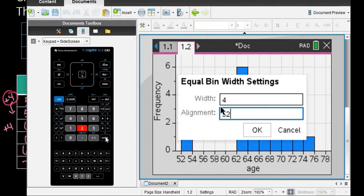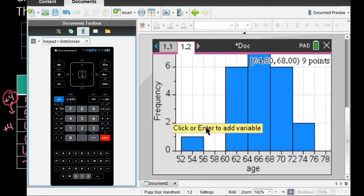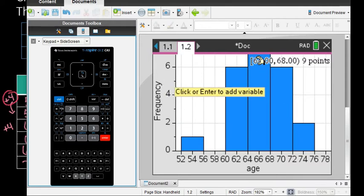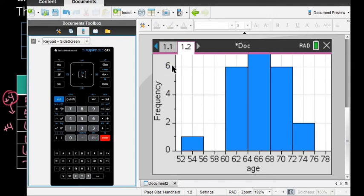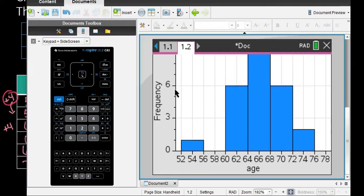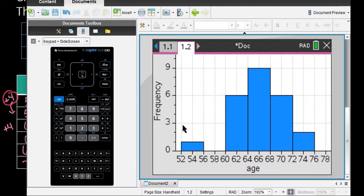Hit enter and it automatically adjusts. Now I have six classes. I can't see the top, but hovering shows there's nine. You can grab your scale and pull it down to show the top.